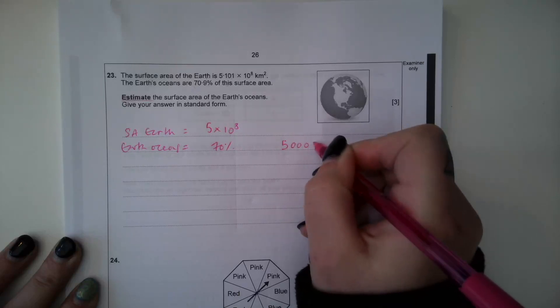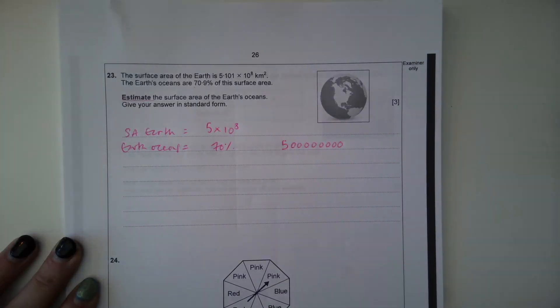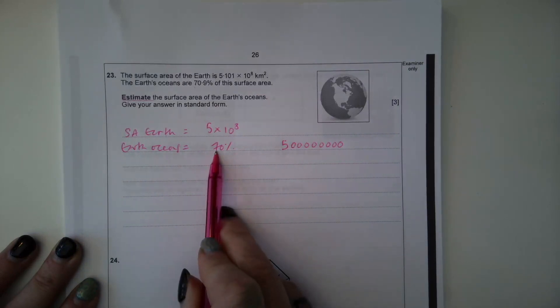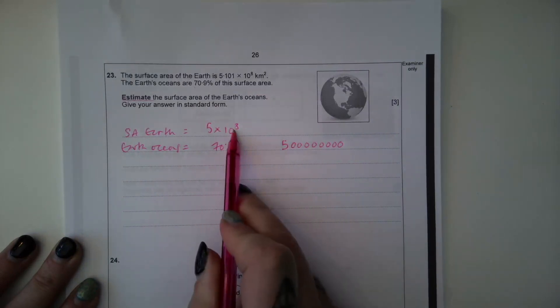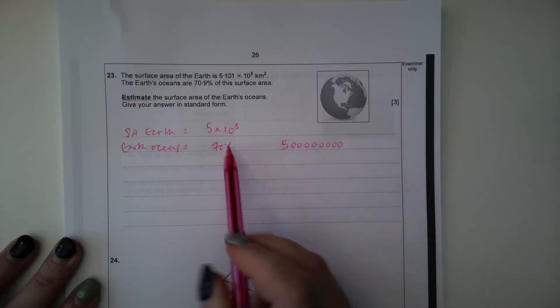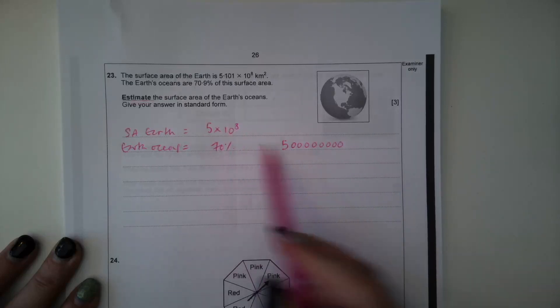So 70.9 to 1 significant figure will be 70%. So 5 times 10 to the power of 8 is 5, 1, 2, 3, 4, 5, 6, 7, 8. So 70% would be this divided by 100 and then times by 7.